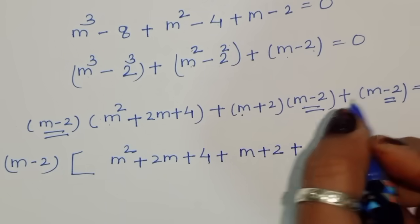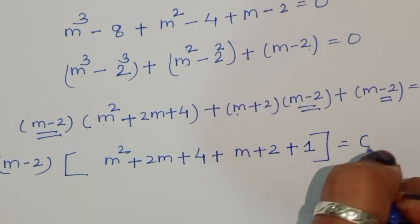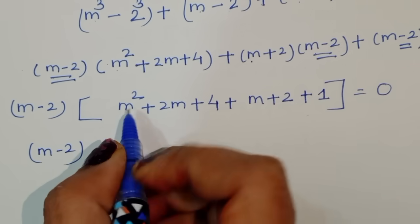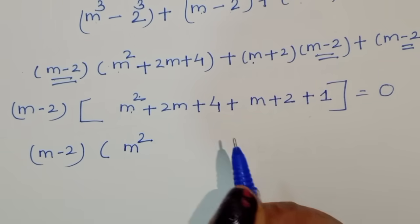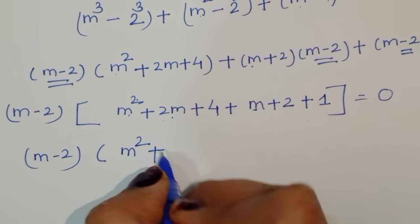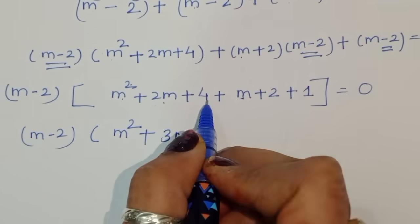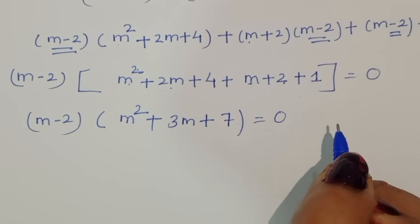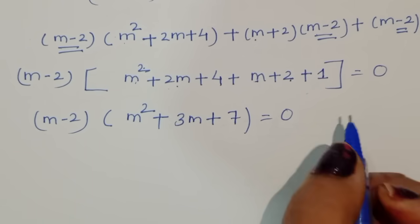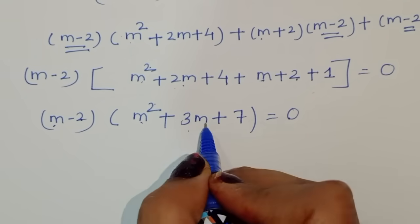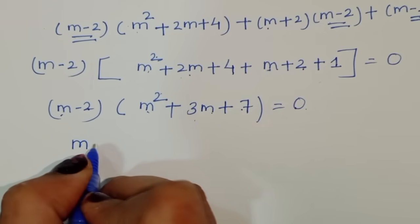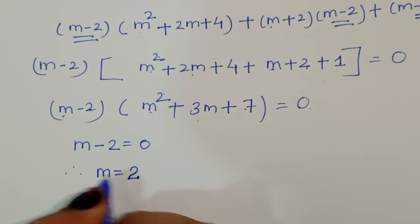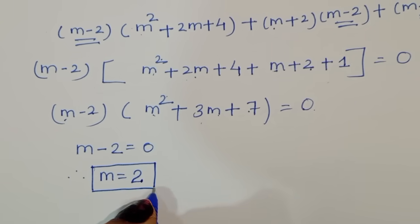Now (m − 2) is common in all terms, so we factor it out: (m − 2)(m² + 2m + 4 + m + 2 + 1) = 0, which simplifies to (m − 2)(m² + 3m + 7) = 0. We now have two equations: m − 2 = 0 and m² + 3m + 7 = 0. From the first equation, m = 2.